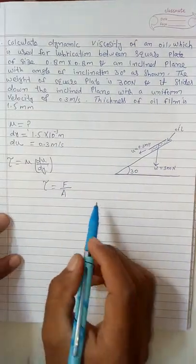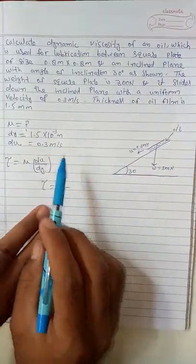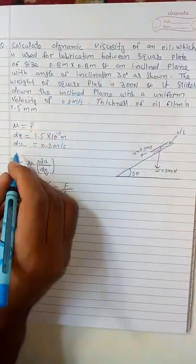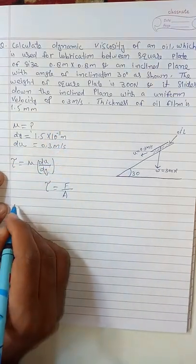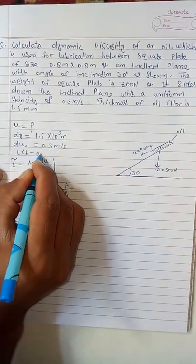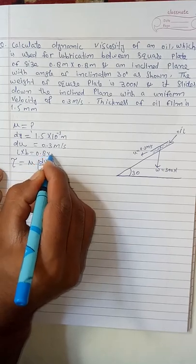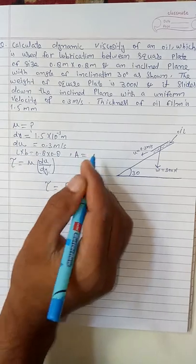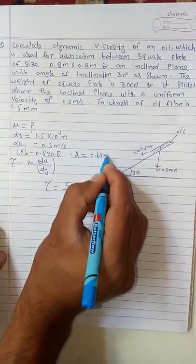The area is also given because the dimensions of this pallet are given. So the pallet has dimensions length times breadth, that is 0.8 × 0.8, so the area will be 0.64 square meters. This is the area.